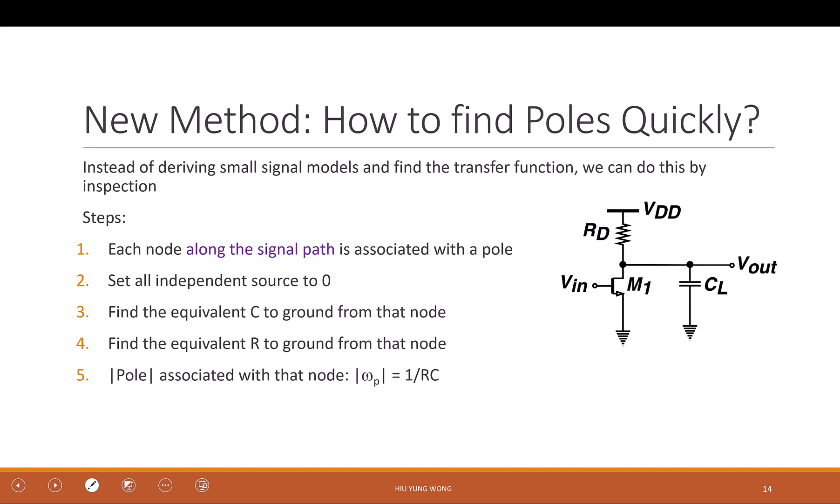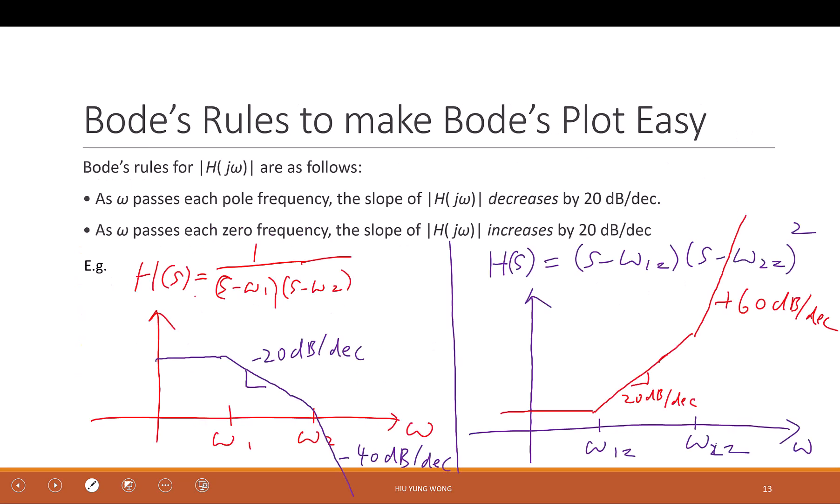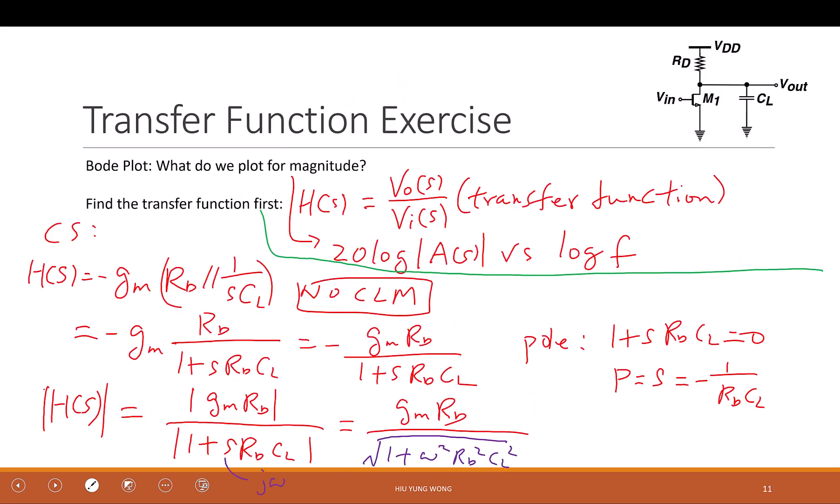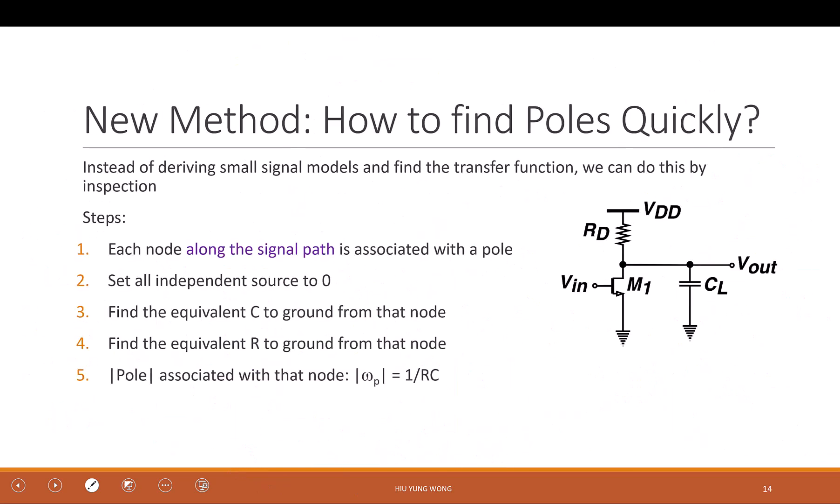Then what can you do? You can use some inspection only to find the pole. So here what it promises is that it can help you to find the pole but not this function. It's not helping you to get this function, but you can tell you that the pole is 1 over RdCL. So how do we do it? You need to follow this very carefully. Put in your cheat sheet in the exam. Don't make mistakes.